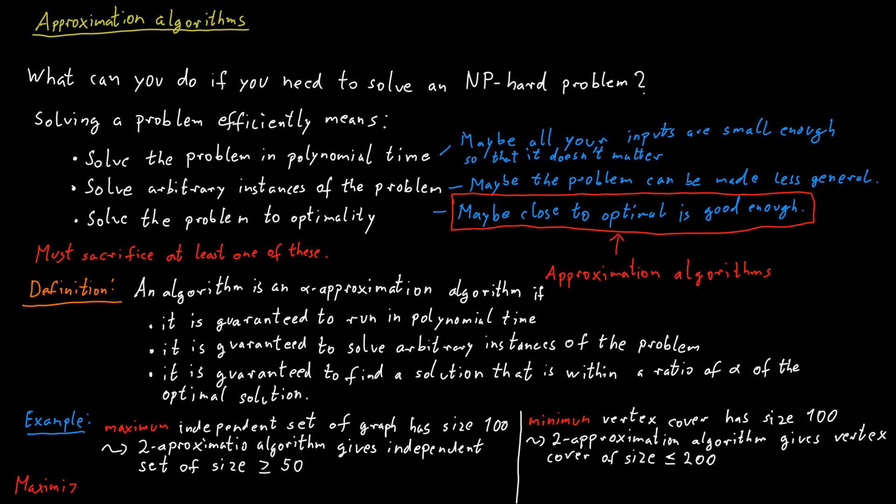In general, if you have a maximization problem like maximum independent set, then an alpha approximation algorithm has to produce a solution with a profit of at least 1 over alpha times the profit of the optimal solution. On the other hand, if you have a minimization problem, like minimum vertex cover for example, then an alpha approximation algorithm has to produce a solution with a cost of at most alpha times the cost of an optimal solution.